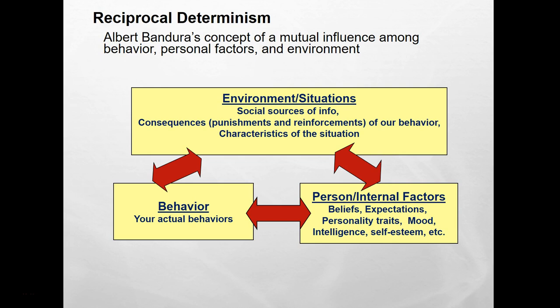Reciprocal determinism comes from Albert Bandura. He calls it reciprocal determinism because his idea is that each of these three things — the environments or situations we're in, your internal or personal attributes, and your actual behaviors — all influence each other. Those all come to determine how you behave. Sometimes these influences are similar across situations and we behave similarly, which explains why our behavior is pretty consistent. But sometimes we find ourselves in situations that require us to adjust our behavior, which is why we're not 100% extroverted in every situation, for example.